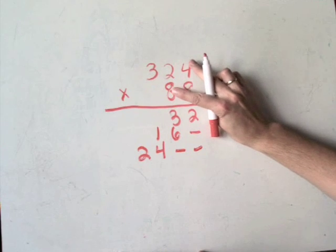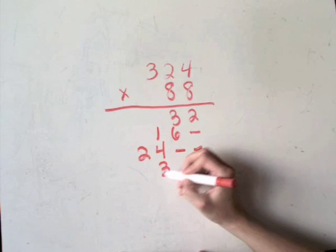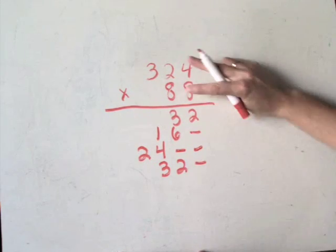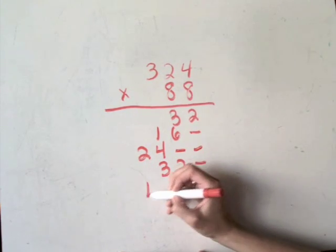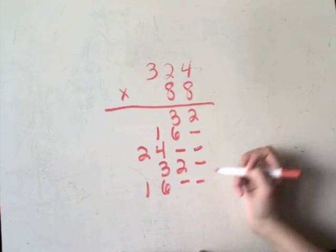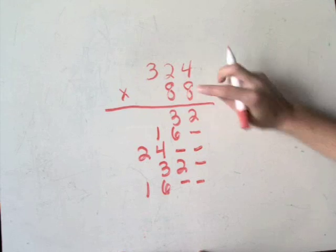Then we come down here. 8 times 4 is 32, one placeholder. So you see our pattern begins again. 8 times 2 is 16, you have two placeholders. 8 times 3, 24, and you have three placeholders this time.